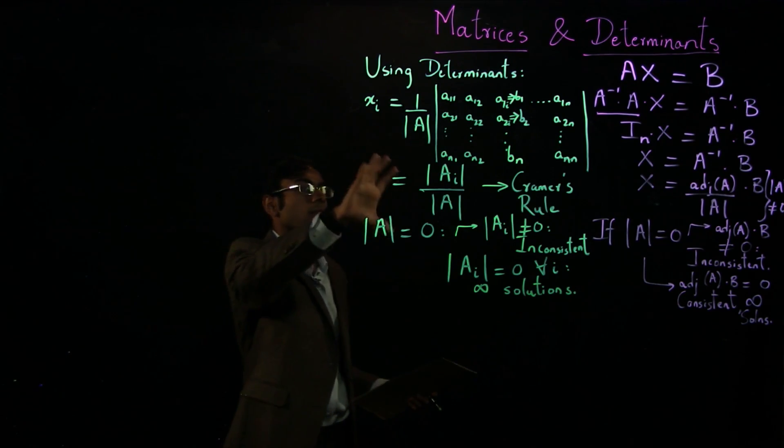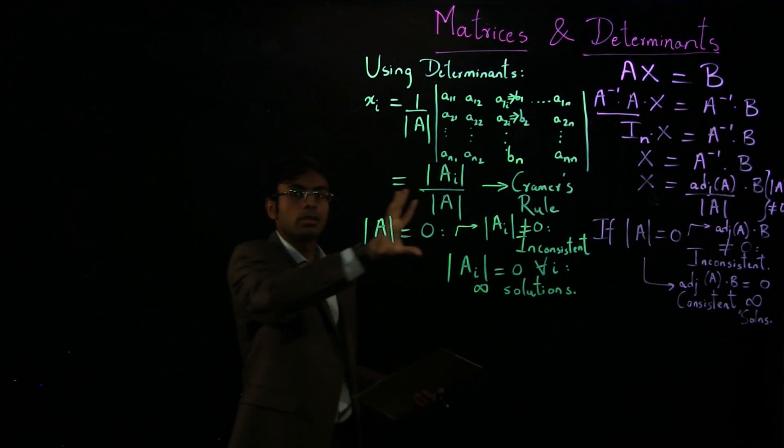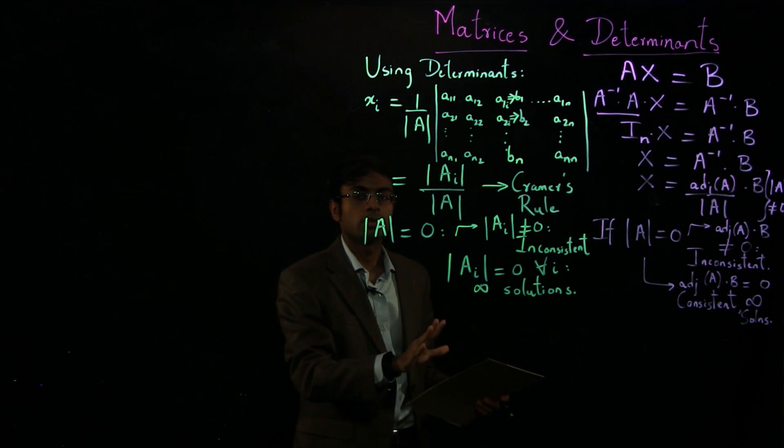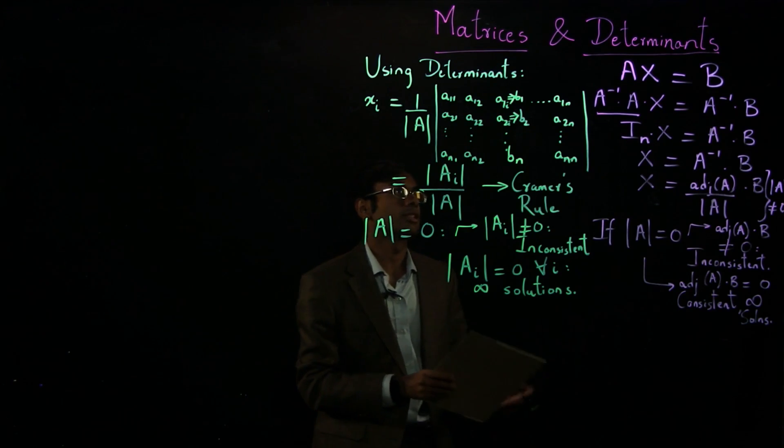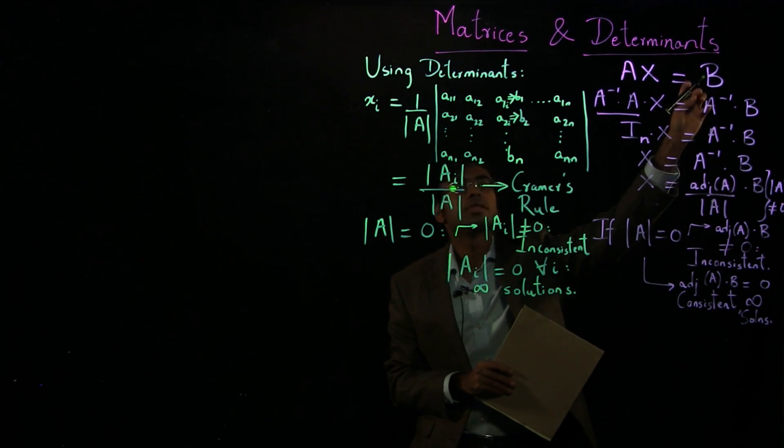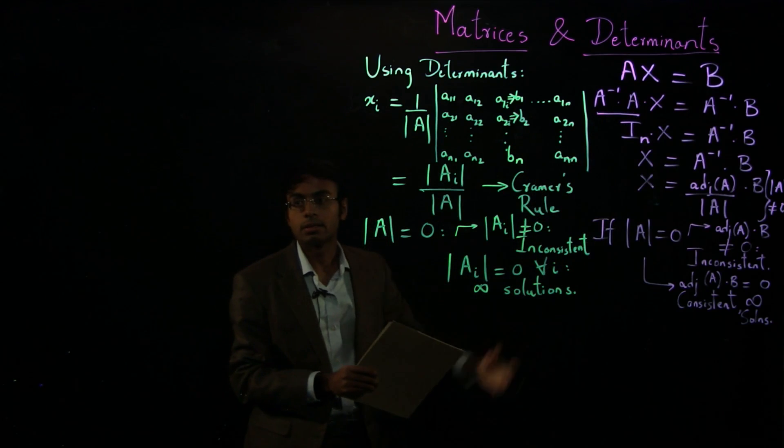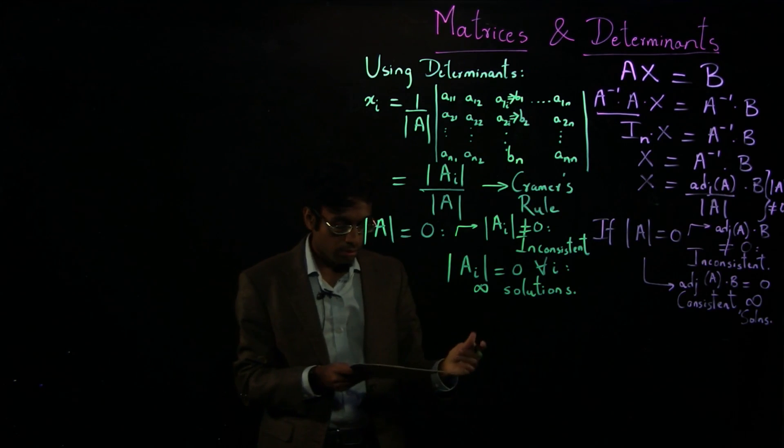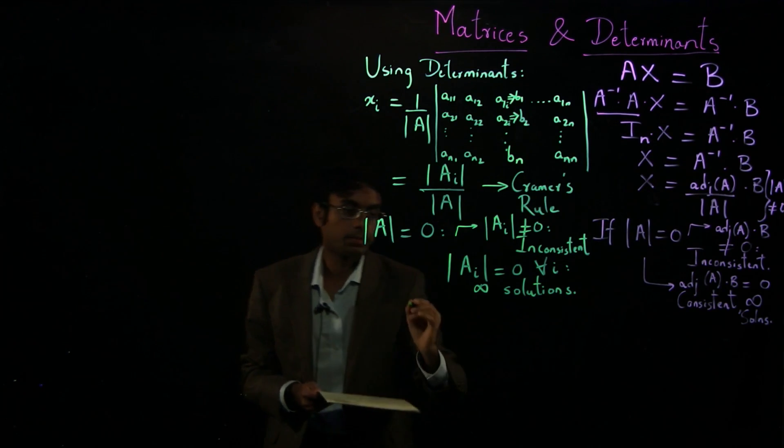So we have looked at two methods to solve a system of simultaneous linear equations in n unknowns for the non-homogeneous case, which means that at least one of the elements of your right-hand side, the B matrix, is non-zero.